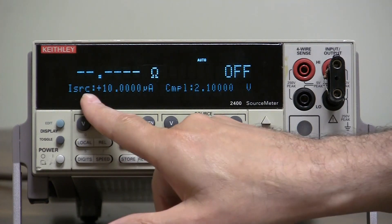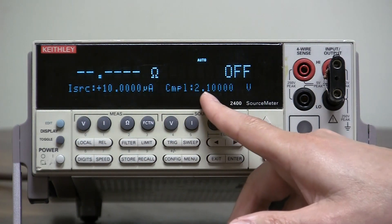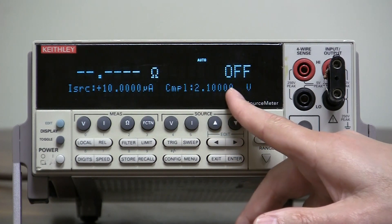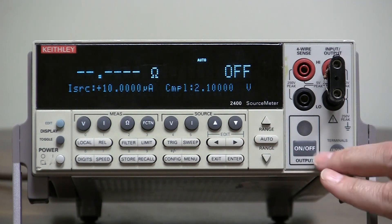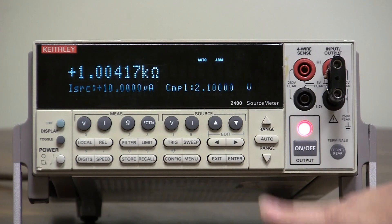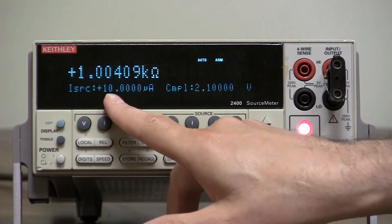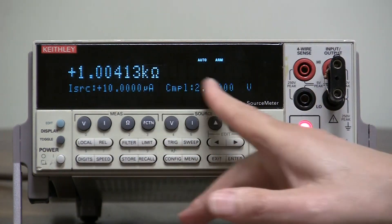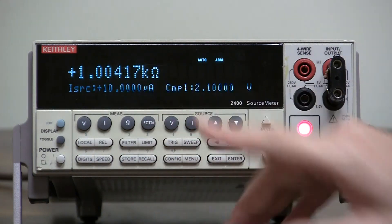Now, it automatically comes up with 10 microamps and compliance of 2.1 volts. Well, let's just see if that works. There we go, it's a 1K resistor, it's sourcing 10 microamps up to 2.1 volts for reading 1K ohms. Great.